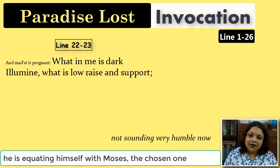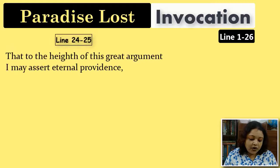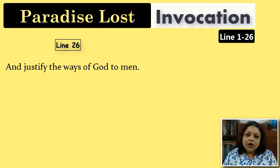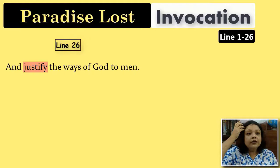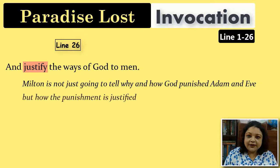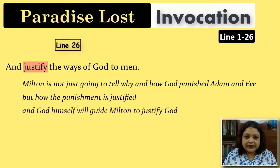'That to the height of this great argument I may assert eternal providence, and justify the ways of God to men.' Providence means the way God metes out justice — his judgment. The word 'justify' is important: Milton is not just going to tell us what happened or why Adam and Eve fell, but how God's punishment was justified. It is as if God is justifying his ways to us through Milton, again passing responsibility to God himself.